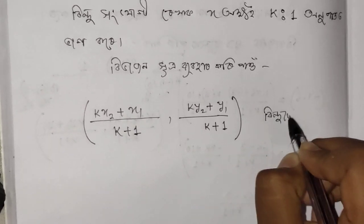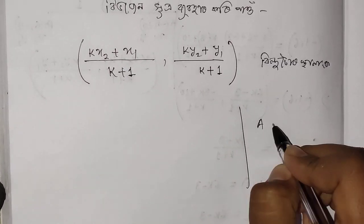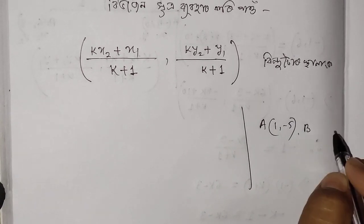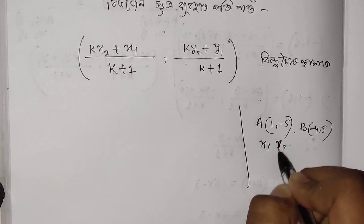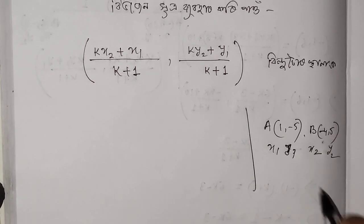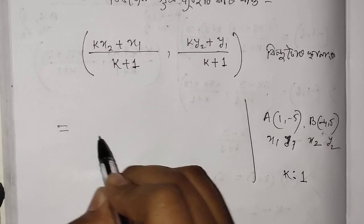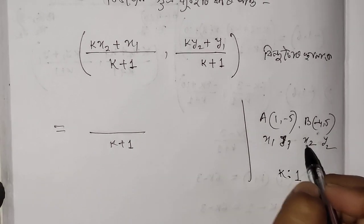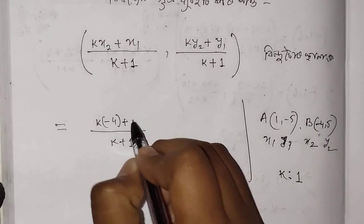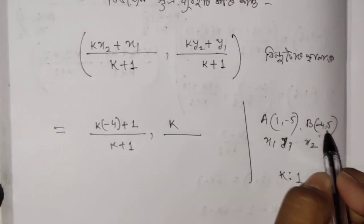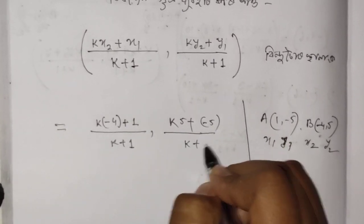Now substituting: x1 = 1, y1 = -5, x2 = -4, y2 = 5. The dividing point in ratio k:1 gives us x = (-4k + 1) / (k + 1), and y = (5k + (-5)) / (k + 1), which is (5k - 5) / (k + 1).